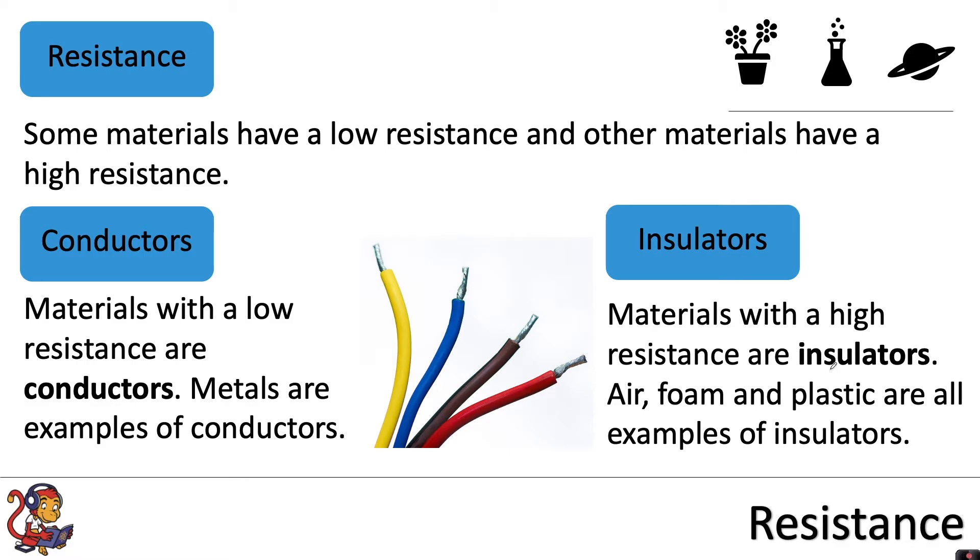Materials with a high resistance are insulators. Air, foam and plastic are all examples of insulators. In fact, the outside of the wire is normally a plastic coating and that's just a safety feature so that we can safely handle the wires.